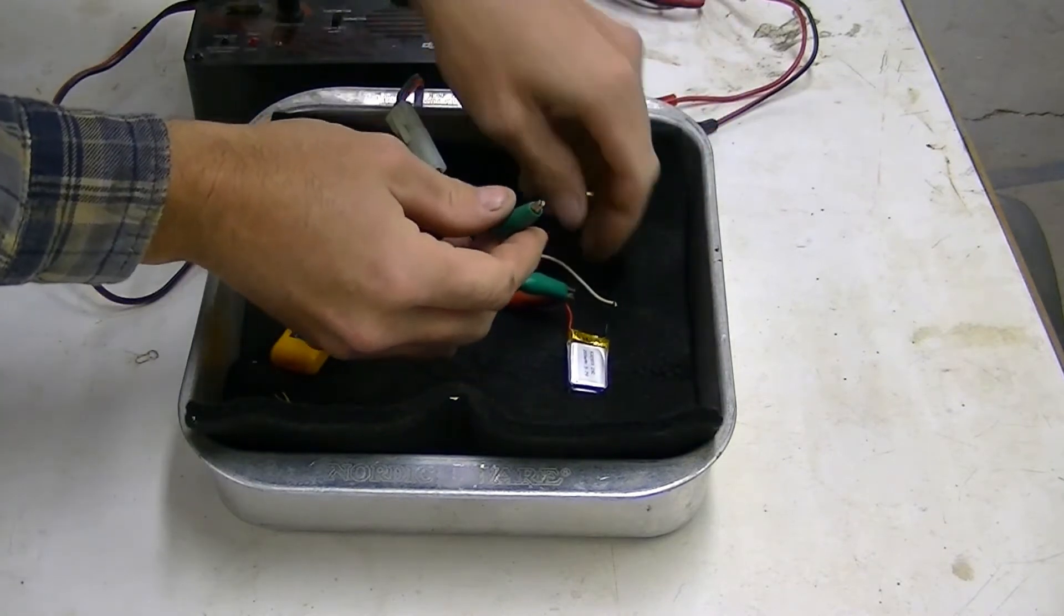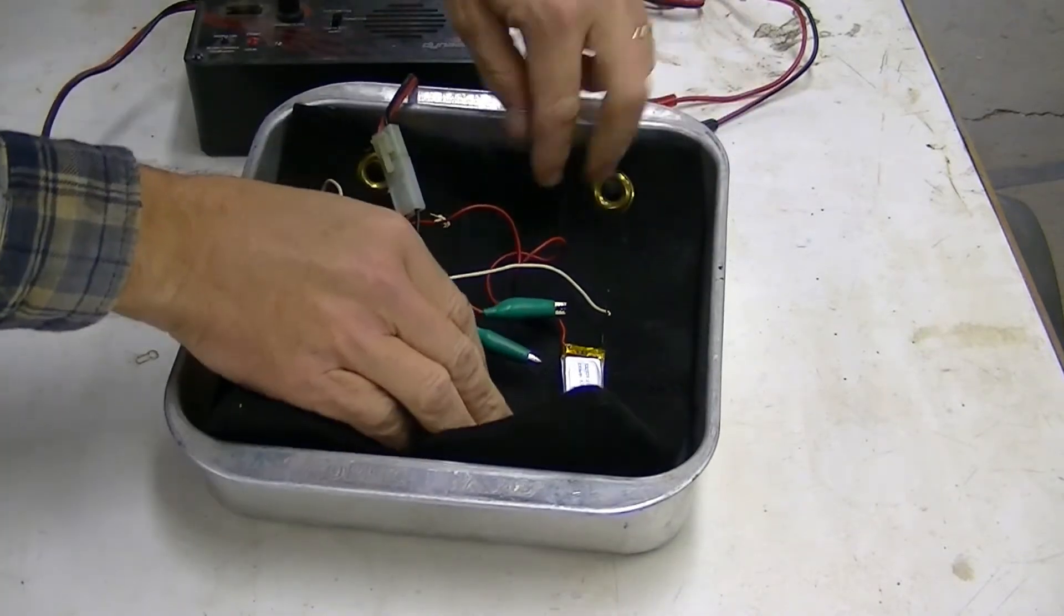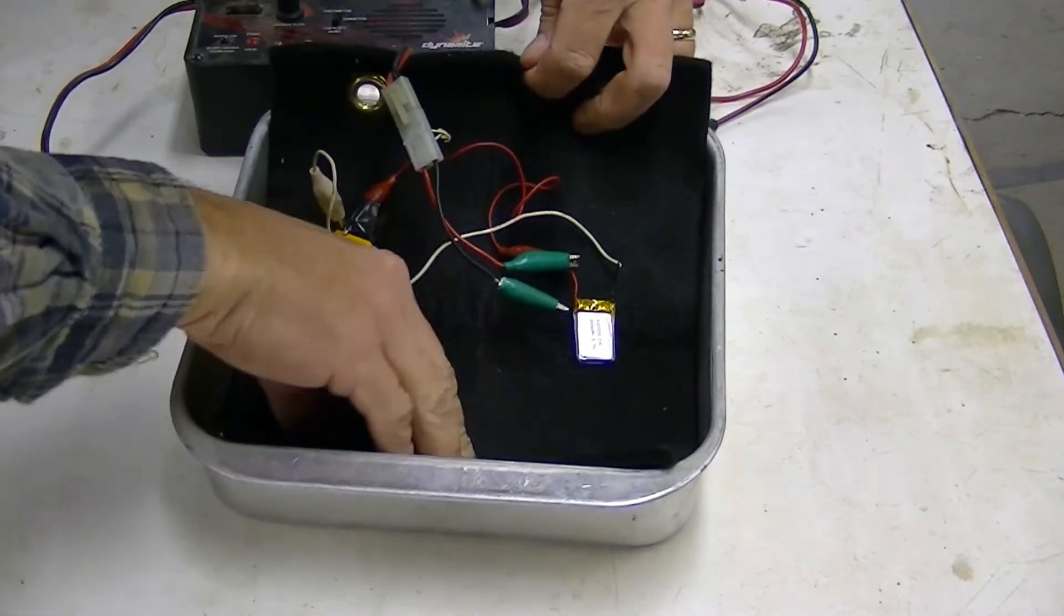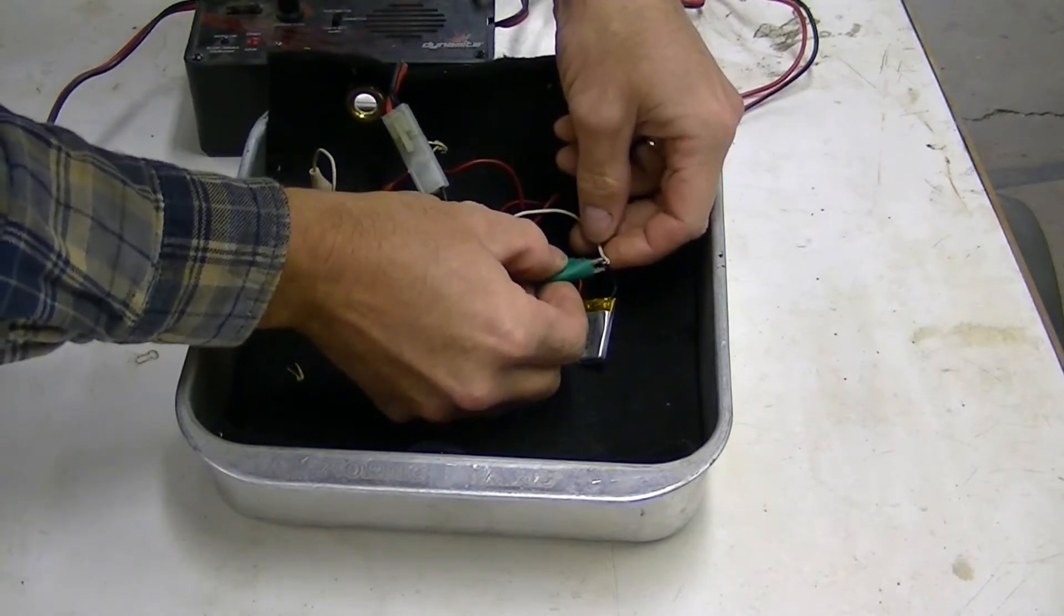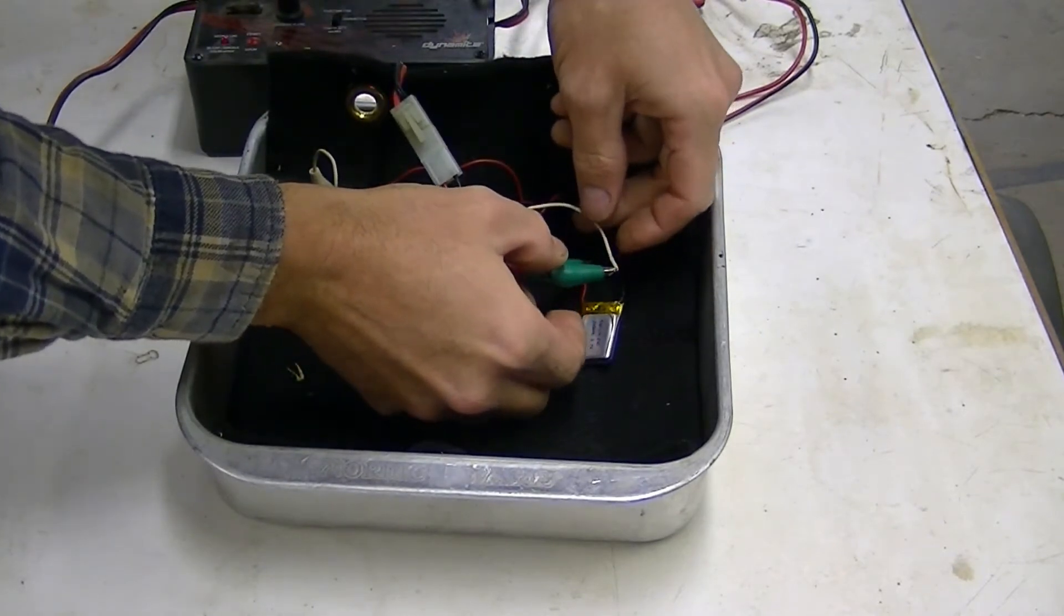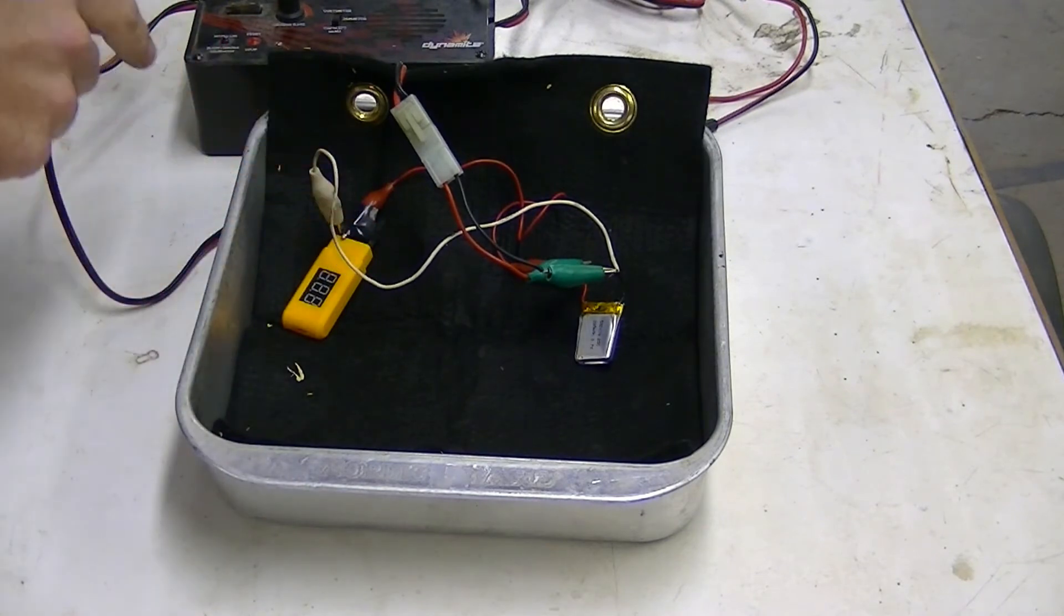Here's the negative. Hook it up to the little LiPo. Okay, we're not showing a voltage on here yet. So, let's go ahead and hit fast charge.